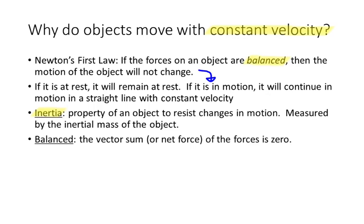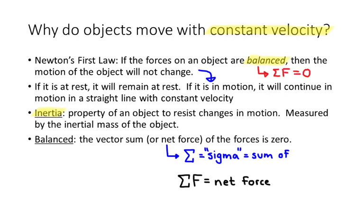We can quantify that by the inertial mass of the object. So, a train has more inertia than a car because a train has more mass. And when I say that the forces on it are balanced, that just means that the vector sum is equal to zero. We can use the symbol sigma to represent sum or net. And so, kind of a shorthand way of writing balance would be to write that the sum of the forces equals zero.